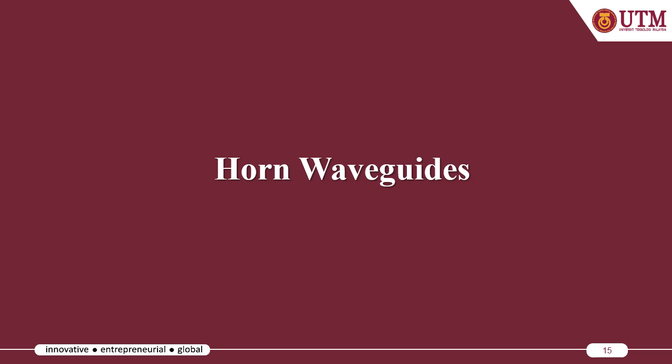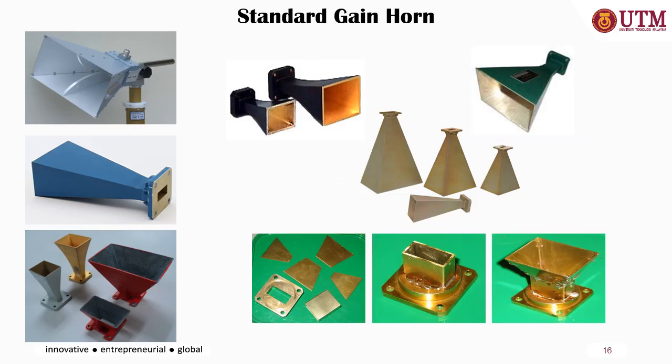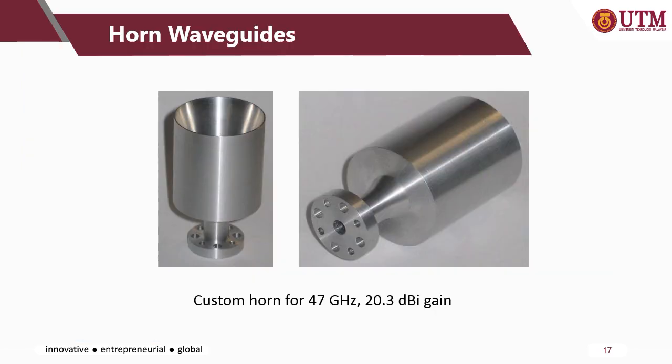Next is the horn waveguide. You have likely seen this kind of waveguide in your third year PBL lab, where you were required to design a horn antenna to achieve certain gain and targeted frequencies, playing around with the width and height of the horn to get the required performance. This is an example of a horn waveguide custom made for 47 GHz, achieving 20.3 dBi gain.